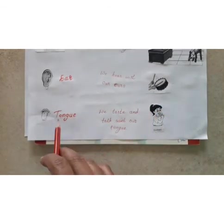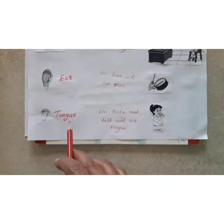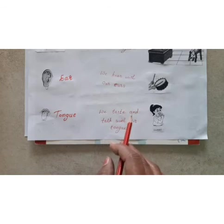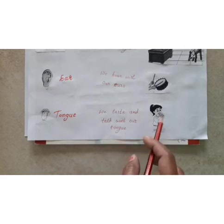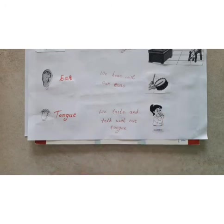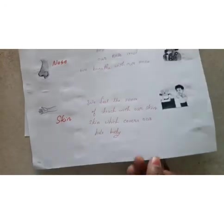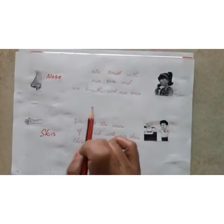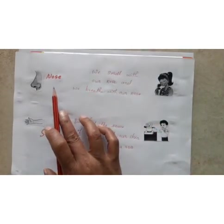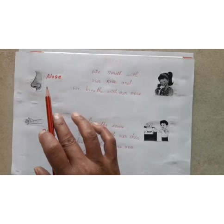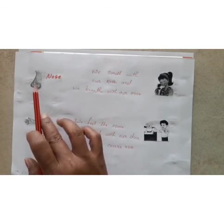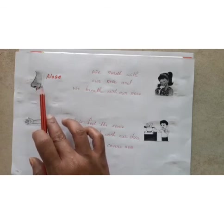The next one is the tongue. Tongue helps us to taste and talk. The next part is the nose. Nose helps us to smell and breathe. With the help of the nose, we breathe and smell.